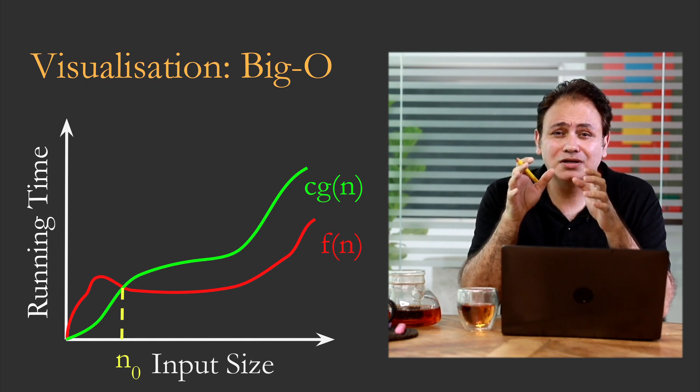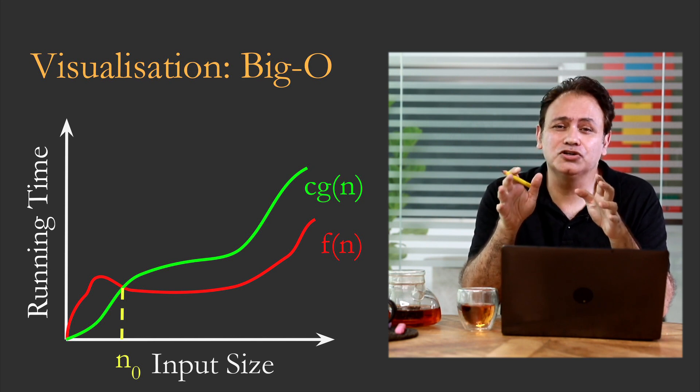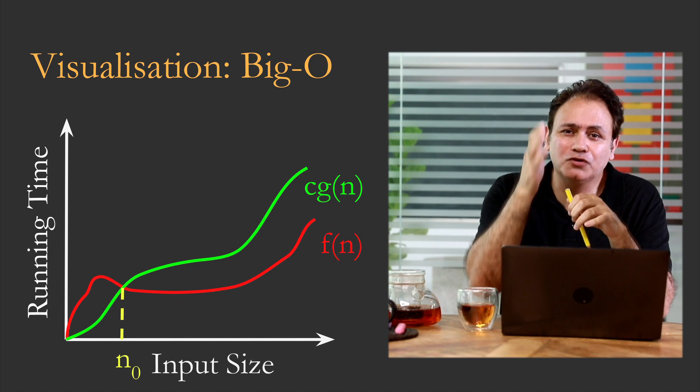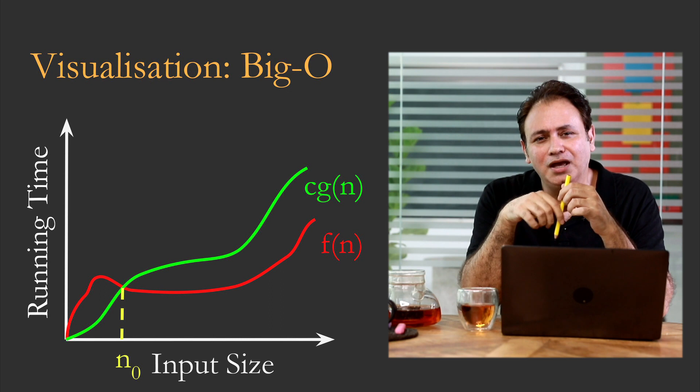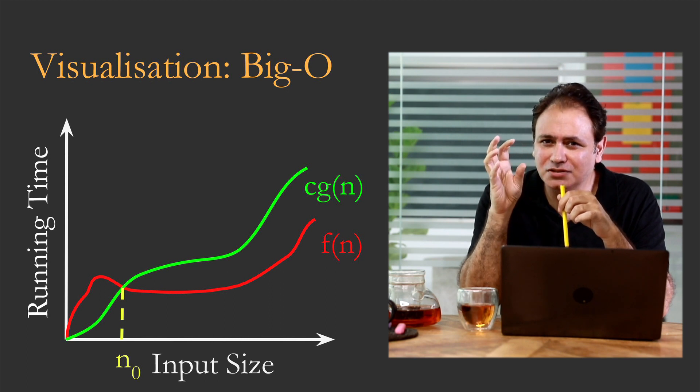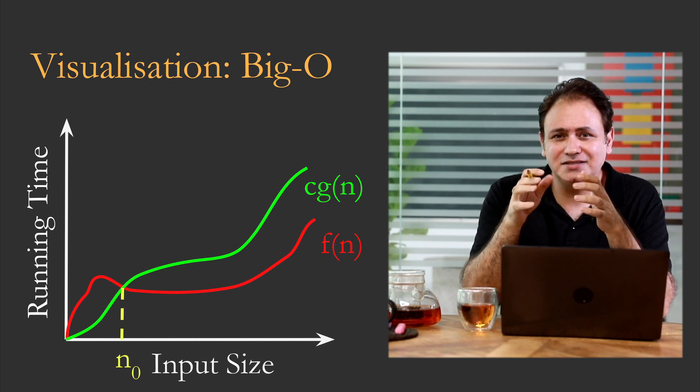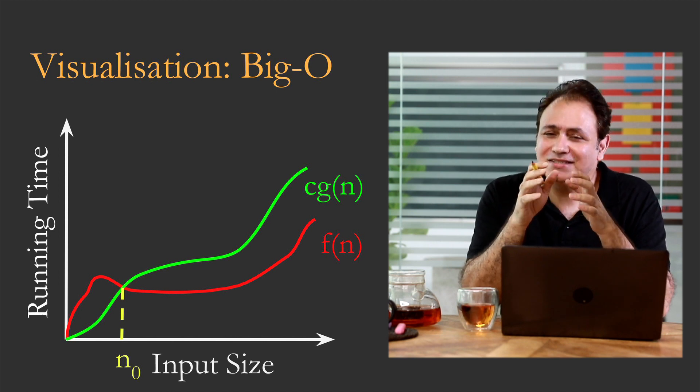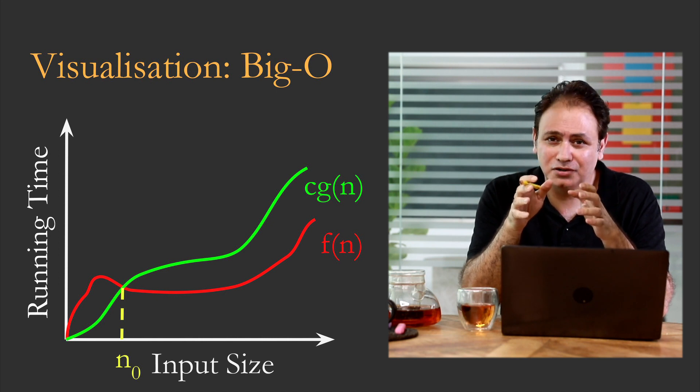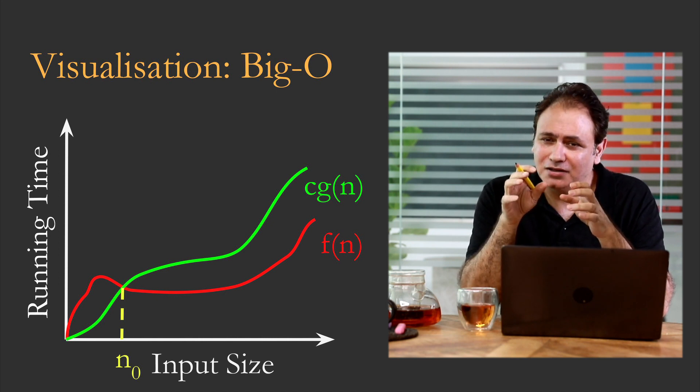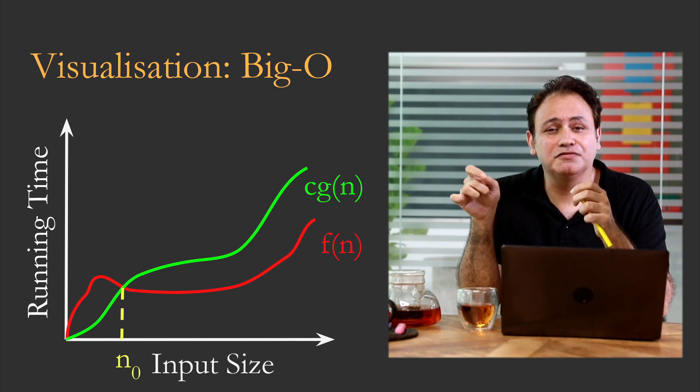Now this plot is important. It is essentially the visualization of the Big O notation. You've got the runtime versus the input size. And you can see c times g(n) and f(n), and there exists an n₀. And you can see that for n greater than or equal to n₀, f(n) is always less than or equal to c times g(n).